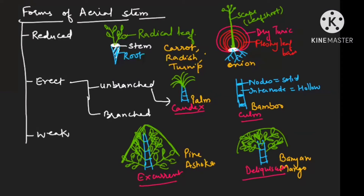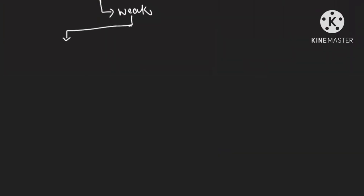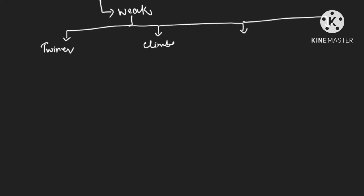So two types of branching exist: excurrent and deliquescent. Unbranched erect stems are of two types: caudex and culm. Now weak stems can be of four types: twiners, clambers, scramblers, and lianas.